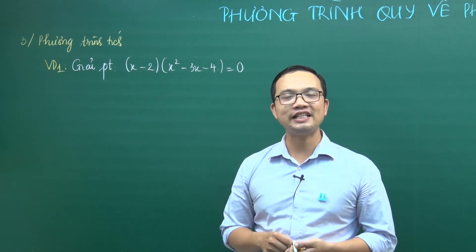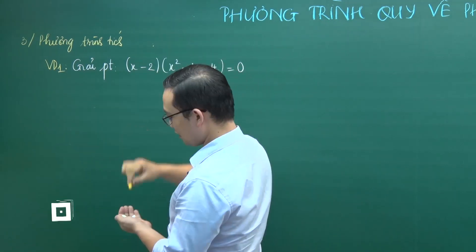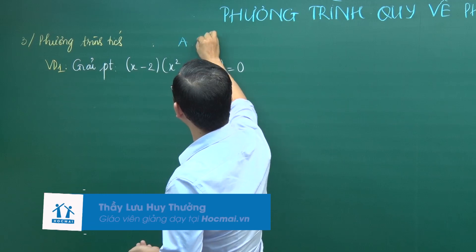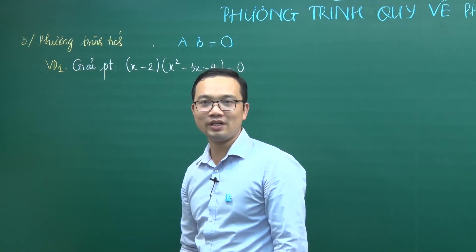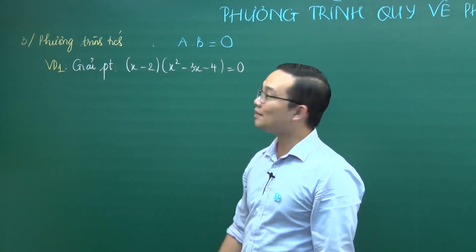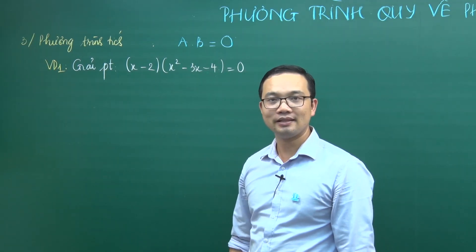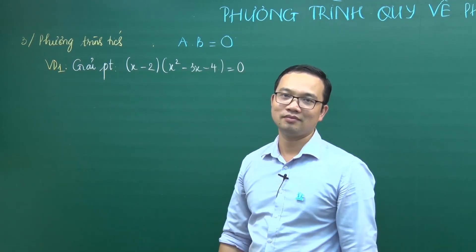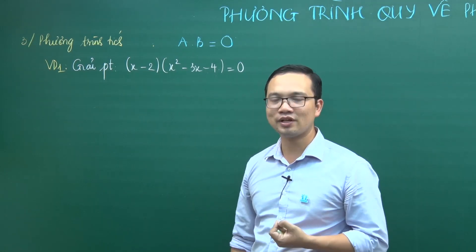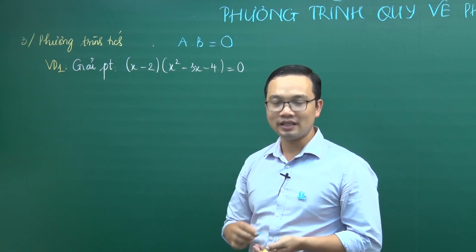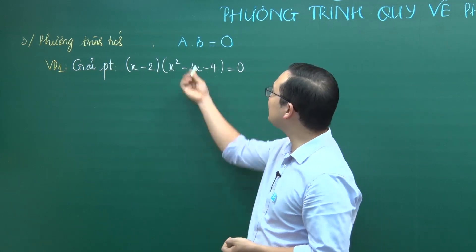Phần thứ 3: phương trình tích. Phương trình tích có dạng A·B = 0, trong đó A, B là các biểu thức (có thể thêm C, D...). Để giải phương trình tích: 2 số nhân với nhau bằng 0 khi và chỉ khi 1 trong 2 số đó bằng 0. Vì vậy chúng ta đi giải từng phương trình với từng biểu thức bằng 0.